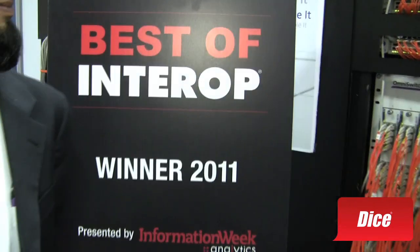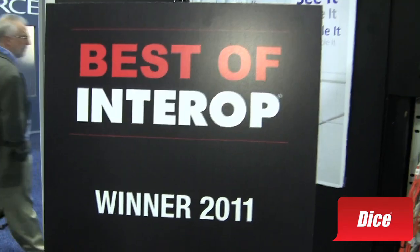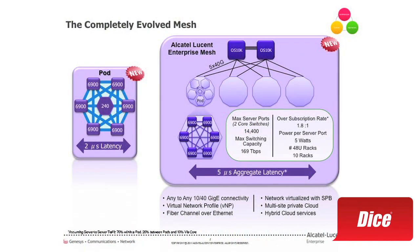The reason I'm standing here is because you guys won Best of Interop. What did you guys win for? We won Best of Interop for our data center switching blueprint for the Application Fluent Network. That's composed of two key elements: our Alcatel-Lucent Mesh and Pod, which provide very low latency server-to-server traffic under 5 microseconds, and the third component of the blueprint, our Virtual Network Profile. That's all about having applications manage services across the data center fabric, and it also allows us to extend enterprise boundaries to include a hybrid cloud model.